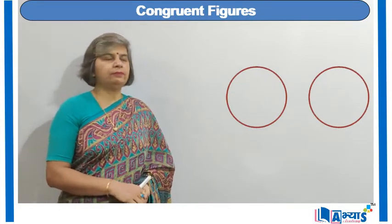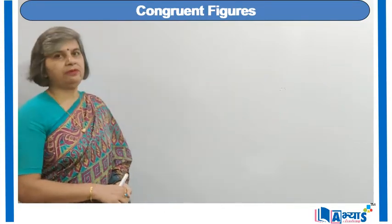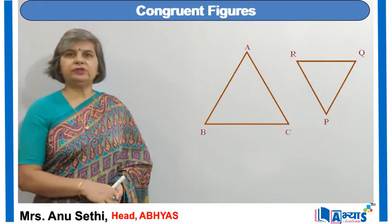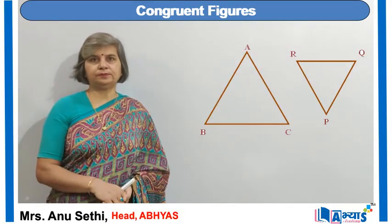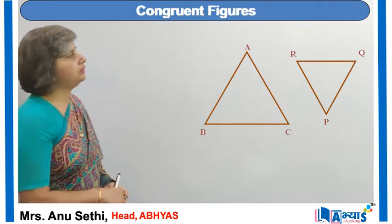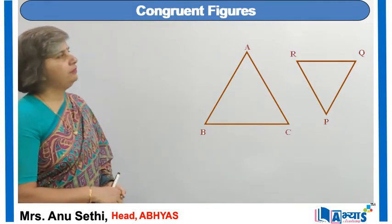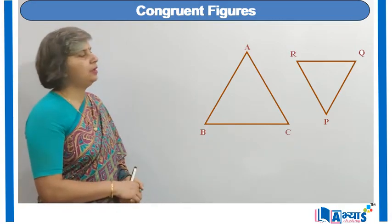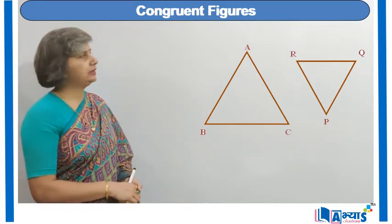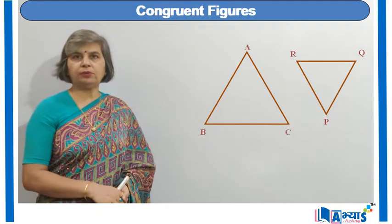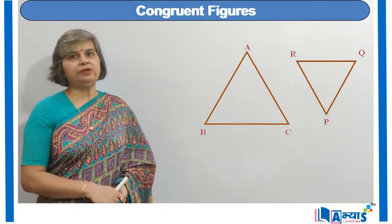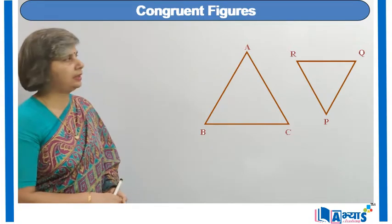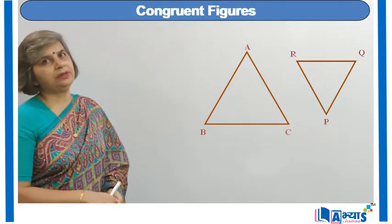In the case of squares, two squares with the same sides are congruent, and two circles with the same radius are congruent. But in the case of triangles, we have to clearly identify which vertex will correspond to which vertex of the other triangle. As you can see in the figures, we have two triangles which are of different sizes, so these two figures are non-congruent to each other.